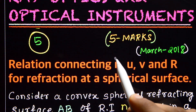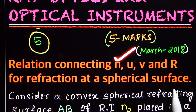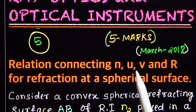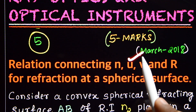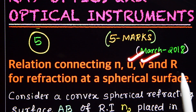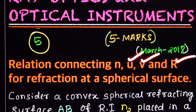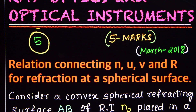N is the refractive index of the medium, U is the object distance, V is the image distance, and R is the radius of curvature of a spherical refracting surface.